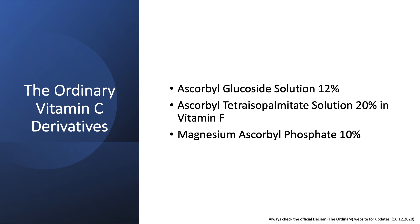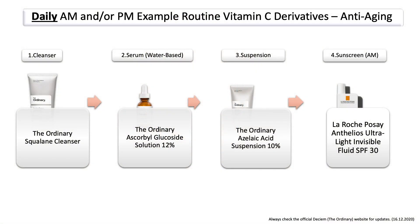Now let's go over The Ordinary vitamin C derivatives, which mostly target brightening the skin. This can be very effective when combined with the Azelaic Acid Suspension, since both are brightening products. The derivatives include the Ascorbyl Glucoside Solution, the Ascorbyl Tetraisopalmitate Solution, and Magnesium Ascorbyl Phosphate — and they have three different formulations, so it's important to know how to properly layer them. For example, you can use the Ascorbyl Glucoside Solution, which is a water-based vitamin C derivative, and then apply the Azelaic Acid Suspension on top. This can be a morning or evening routine depending on your preference.